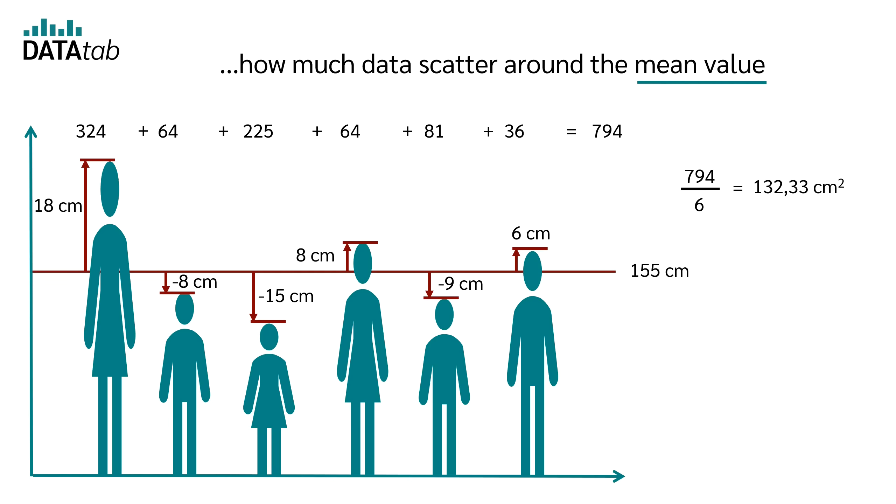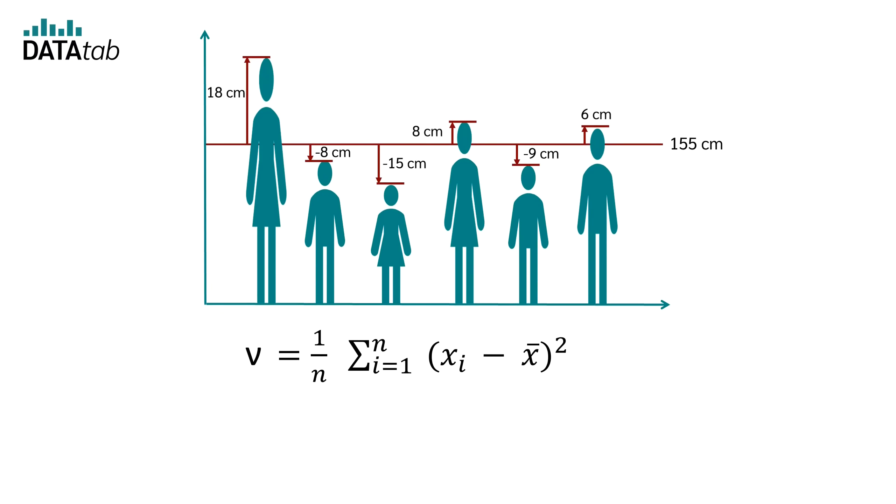But slowly again, how is the formula for the variance now exactly? You can calculate the variance with the following formula. n is the number of persons, in our case it is 6. xi is the size of the individual persons, and x̄ is the mean value of all people.